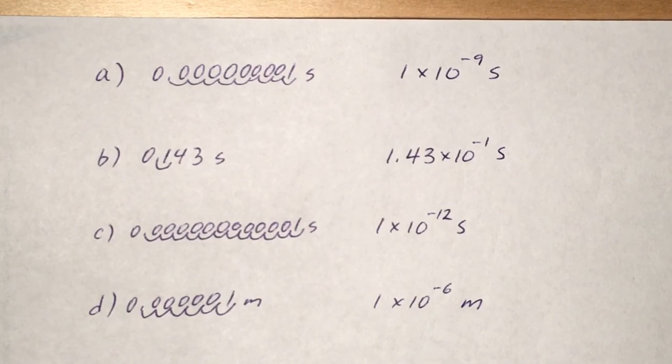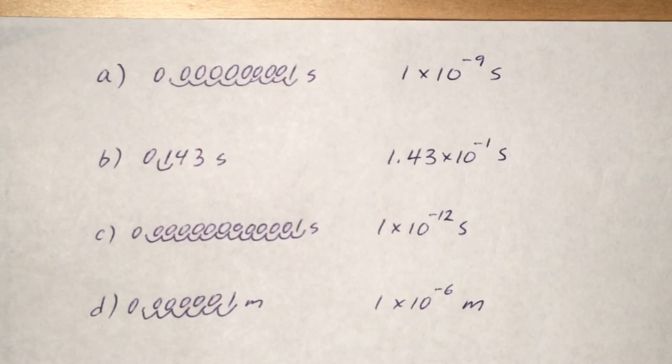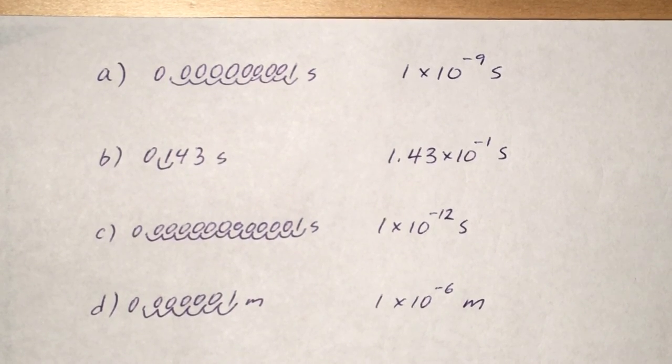And then for D, same thing, we're going to move the decimal place six places to the right so we're going to have our answer be 1 times 10 to the negative 6th meters. So make sure you're putting the right number of sig figs in there, the exponent to the negative, and always make sure to have your units if you need them. Let me know if there's any questions on this one.